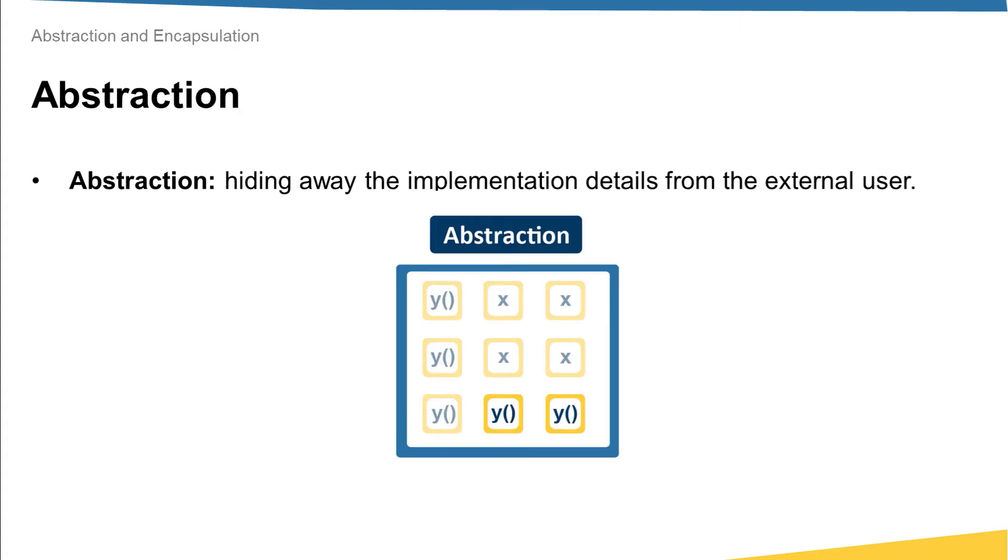Now let's talk about the second pillar of OOP, which is abstraction. Simply, abstraction is just hiding away the implementation details from the external user. You can imagine your class like a toolbox, and within this toolbox there are a lot of tools.